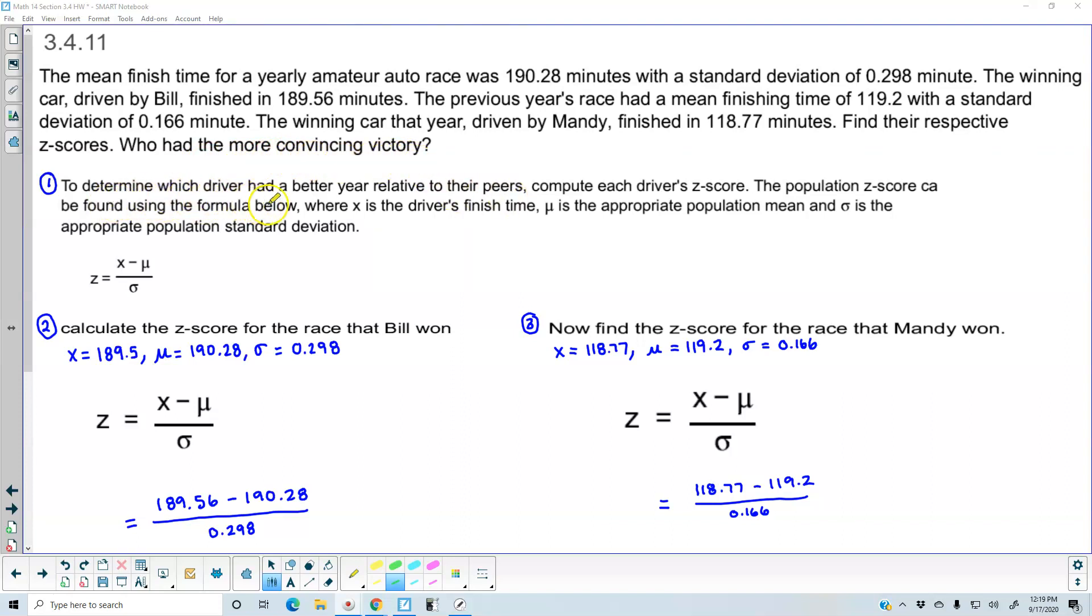In step one, to determine which driver had a better year relative to their peers, compute each driver's z-score. The population z-score can be found using the formula z equals x minus mu over sigma, where x is the driver's finish time, mu is the appropriate population mean, and sigma is the appropriate population standard deviation.